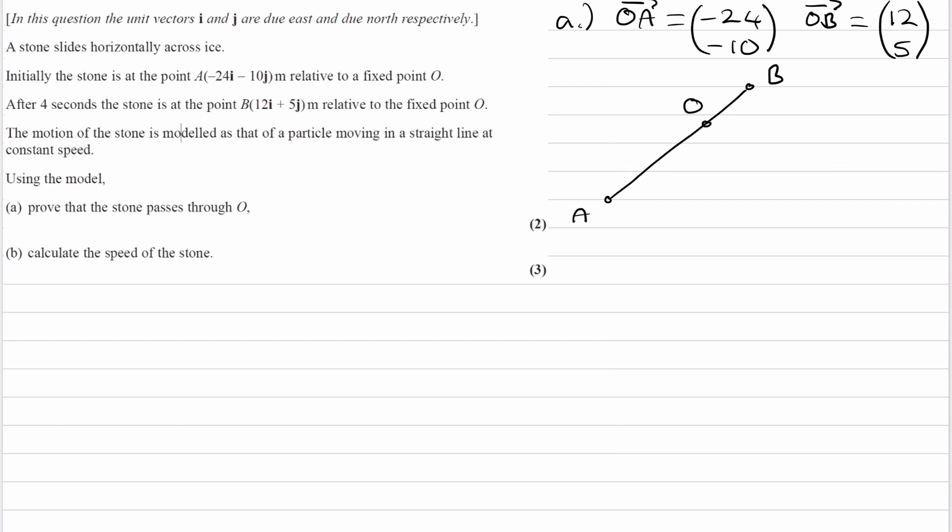Let's work out what AO is. AO is this vector. That would be the negative of OA, which would be (24, 10). We know that OB from above is just (12, 5).